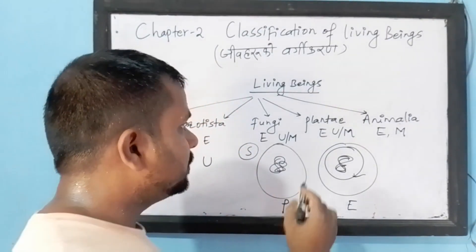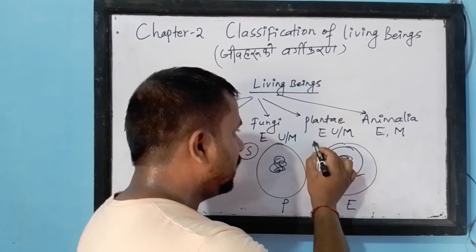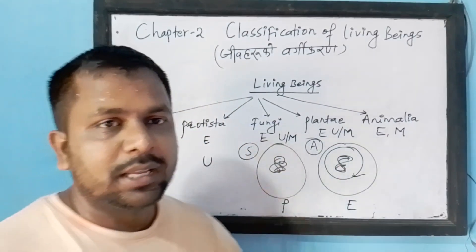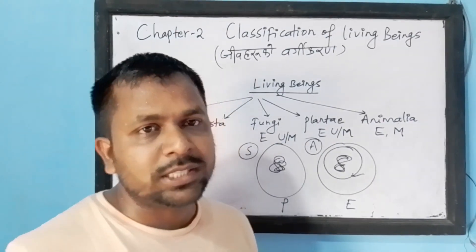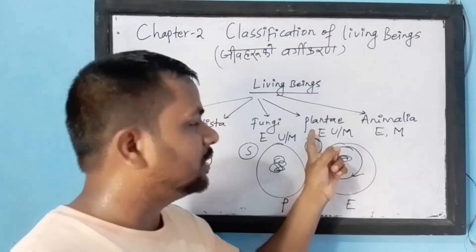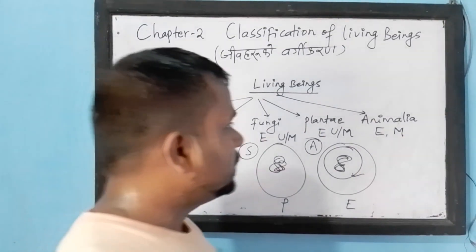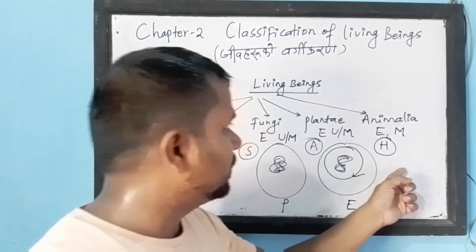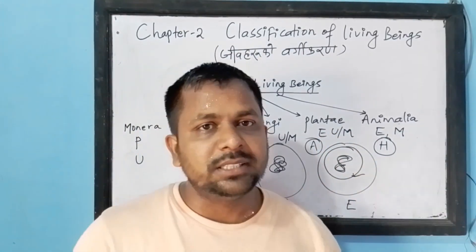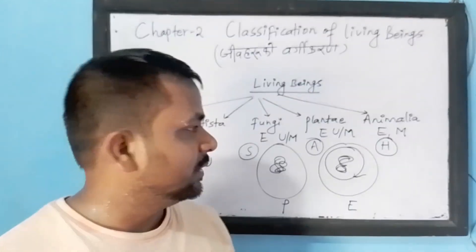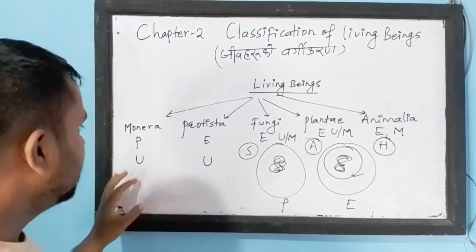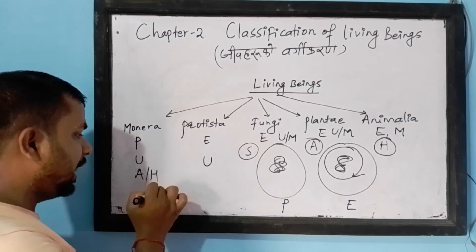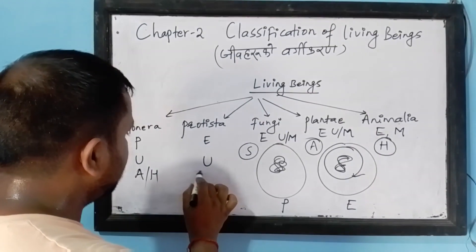Plants are able to prepare their own food, so they are autotrophic organisms. They have chlorophyll, they can perform the photosynthesis process, and they can prepare their own food. Animals were unable to prepare their own food; they depend upon plants to obtain nutrition. Some organisms were autotrophic and some were heterotrophic.